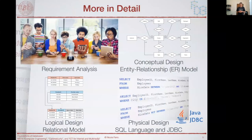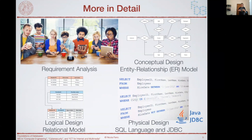We will cover four main areas. First, requirement analysis — you need to learn how to talk with your customers and users in order to understand what the application you need to design for them is. Users are a central concept here, because we design and develop applications for users. Once you have the requirements, you start the conceptual design phase using a formal model called the Entity-Relationship model, which allows you to describe which data you need to manage and how these data are related.